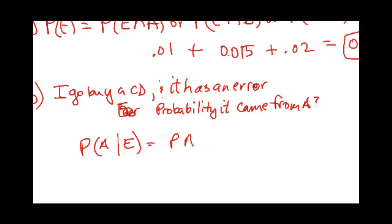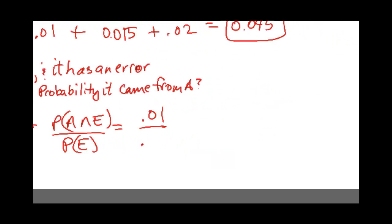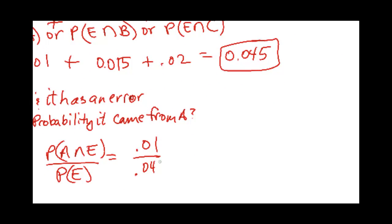So that would be A intersection E over the probability of the condition E, which that is 0.01 divided by 0.045. And that's 0.22222.